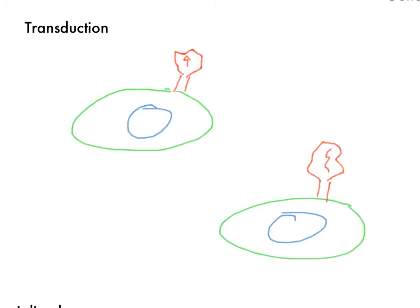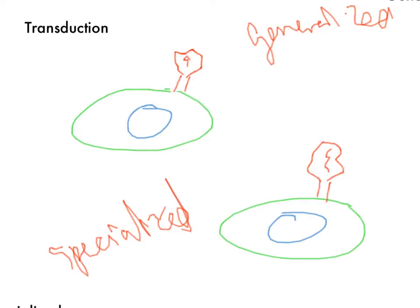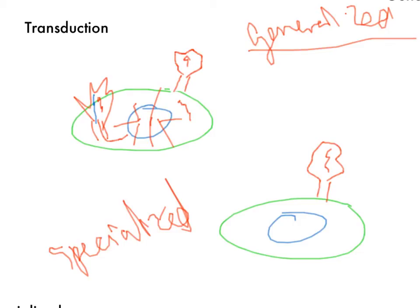Now let's talk about transduction. There are two types: generalized and specialized. In generalized transduction, you have a lytic bacteriophage with viral DNA that comes in and replicates. It's your bacteriophage — it just breaks up the chromosome, integrates some viral DNA into the capsid, but also one of these broken bacterial DNA pieces gets packaged in there. A generalized lytic bacteriophage breaks everything up and replicates as fast as it can — it's really general, it doesn't care, but it takes little pieces with it.